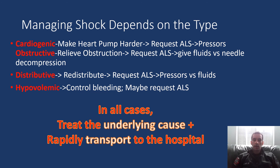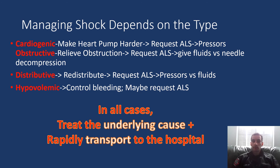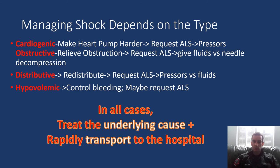How you address shock depends on the type. In cardiogenic shock, the problem is the pump — we need it to pump harder. ALS can give a vasopressor such as epinephrine, though that's a different concentration and route than the EpiPen used for anaphylaxis. You'll need to weigh the risk-benefit of going directly to the hospital versus an ALS intercept.